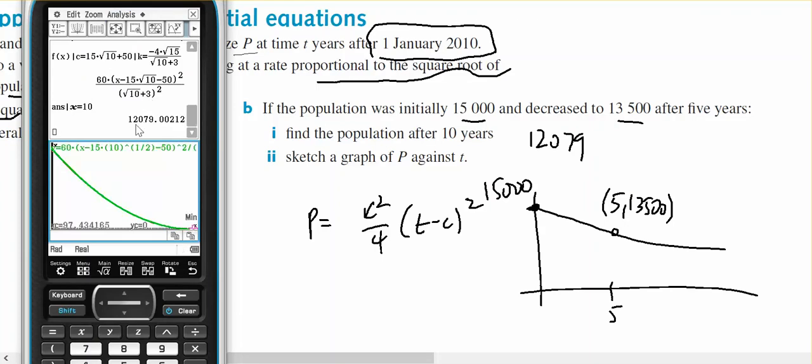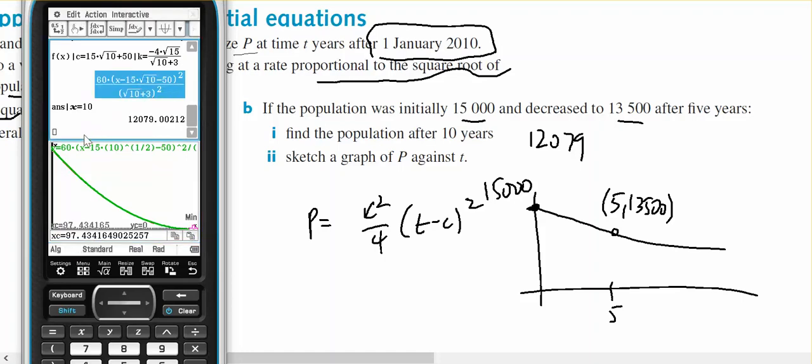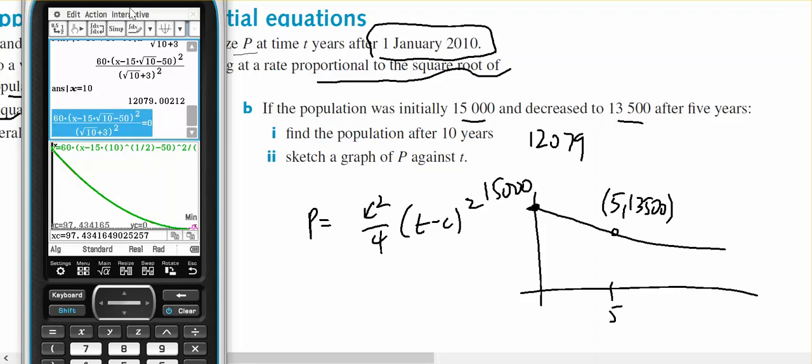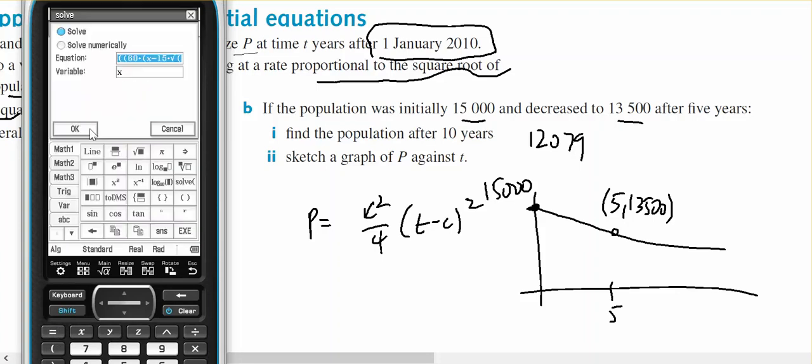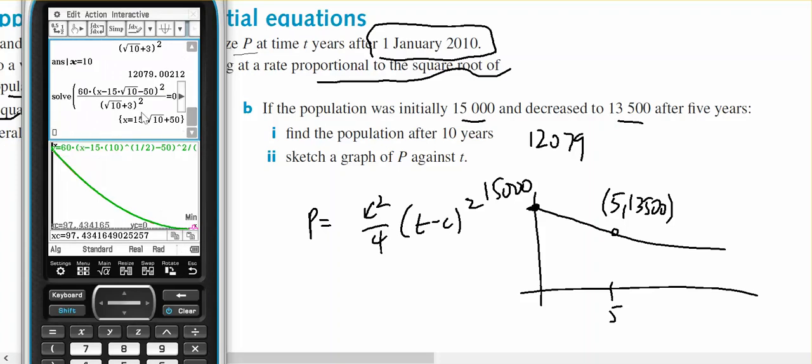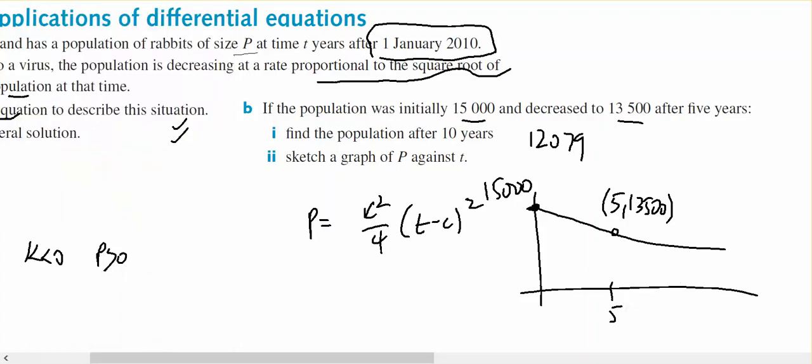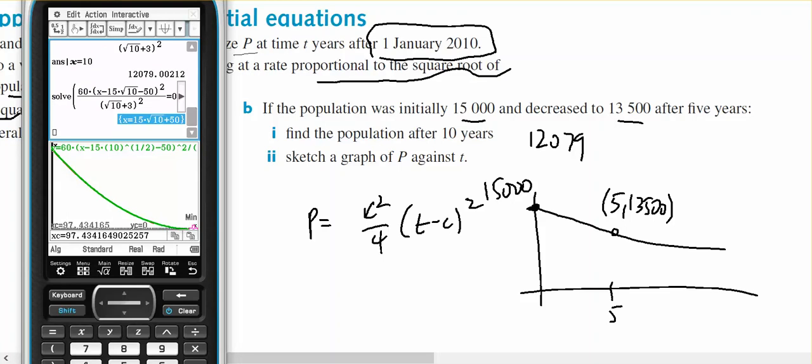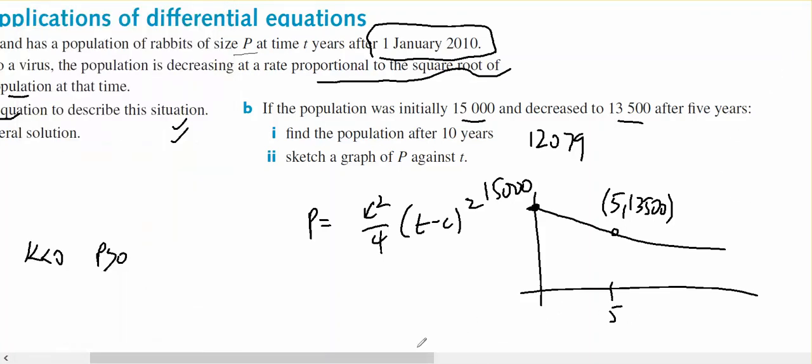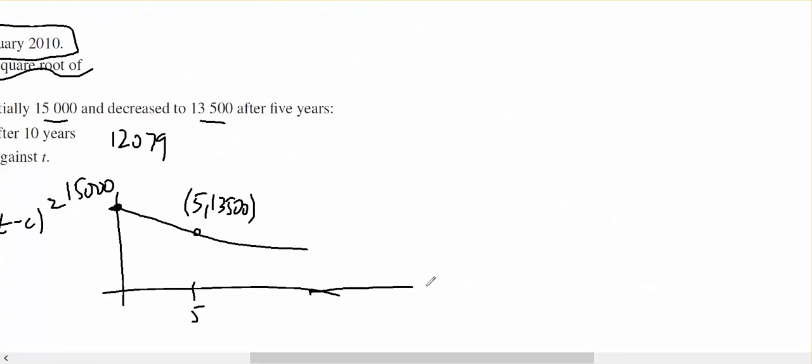And it will tell me it's 97. So if I'm looking for the y intercept, set it equal to zero and solve for x. That's going to be a graph which is 50 plus 15 root 10. 50 plus 15 root 10, t, p, and that's the graph that we're looking for.